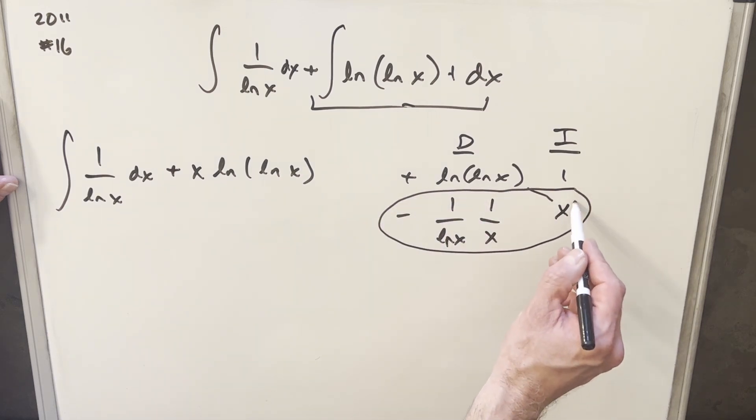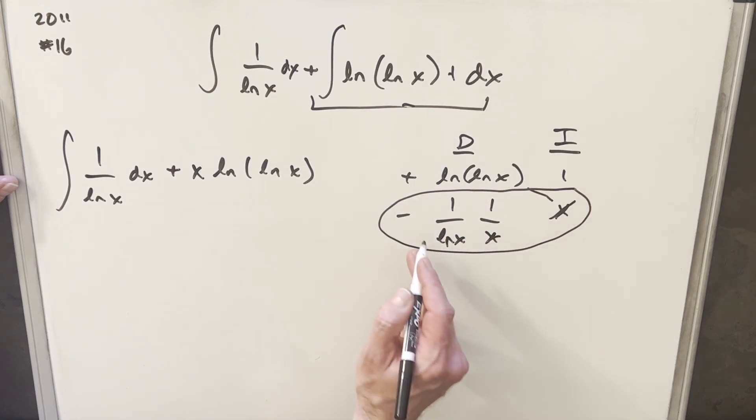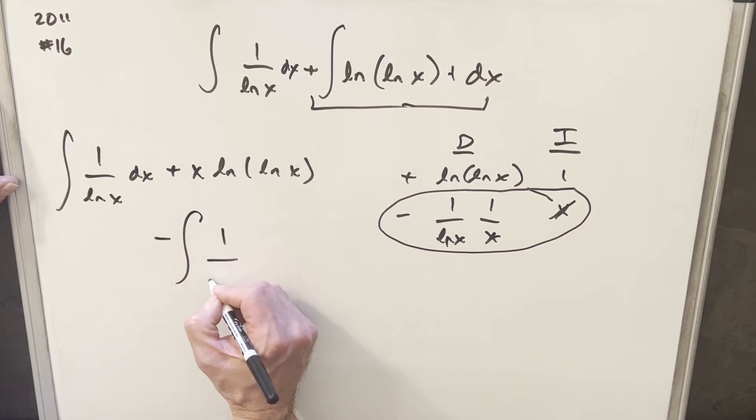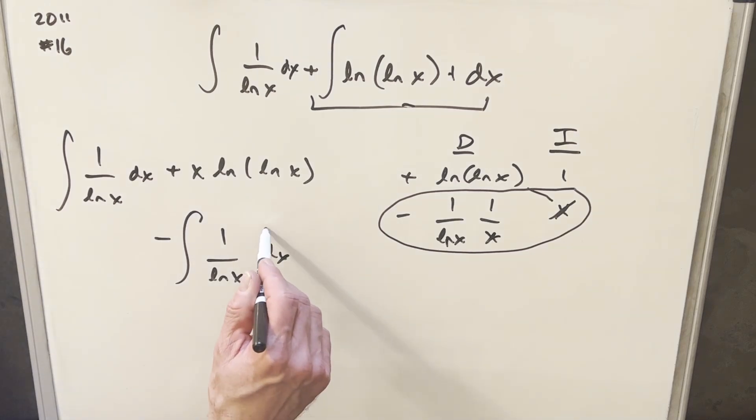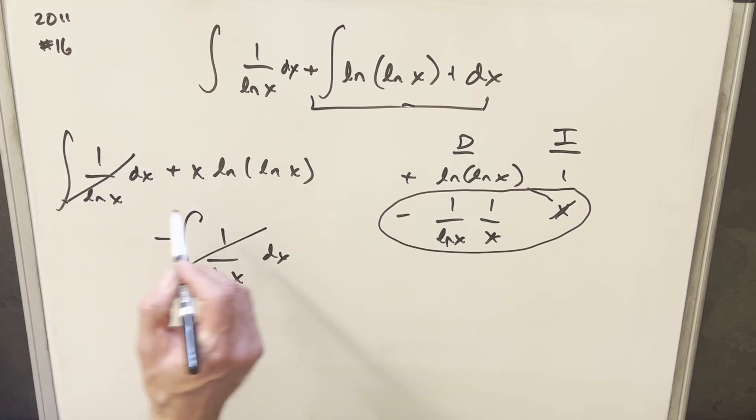What we'll do is we can cancel out an x and an x, so we're going to have minus the integral of just 1 over lnx dx, and that's going to be good news for us. You know why? Because this integral is going to cancel with this integral, and we're just left with this, so actually our solution is going to be pretty easy to get to.